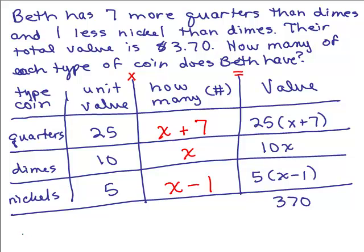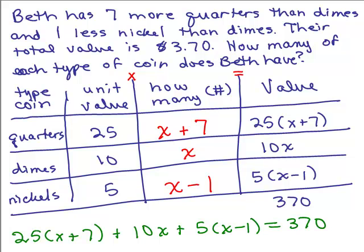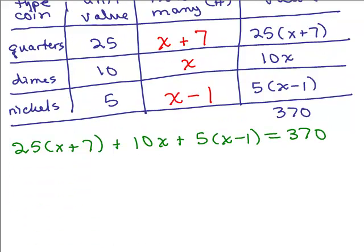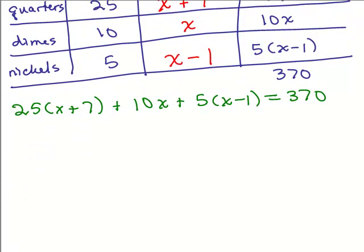So the equation will be 25 times X plus seven. That's the value of the quarters plus how much all the dimes are worth which is 10X plus how much the nickels are worth which is five times X minus one has got to equal 370. So that's the equation we need to solve. All right. So let's do it.